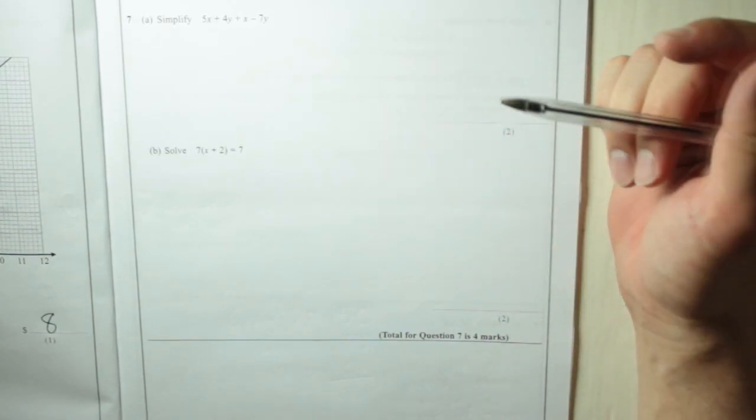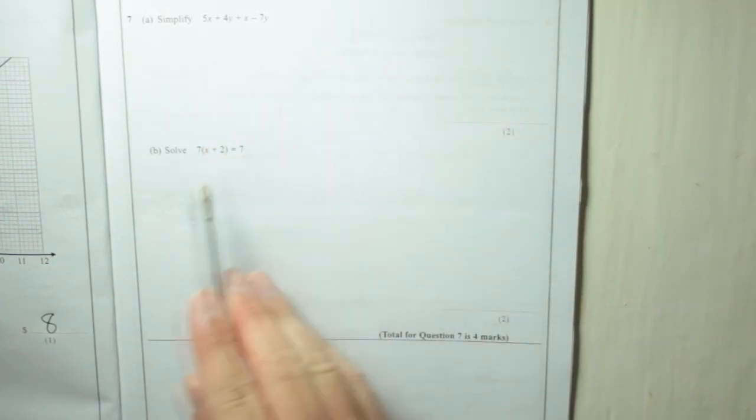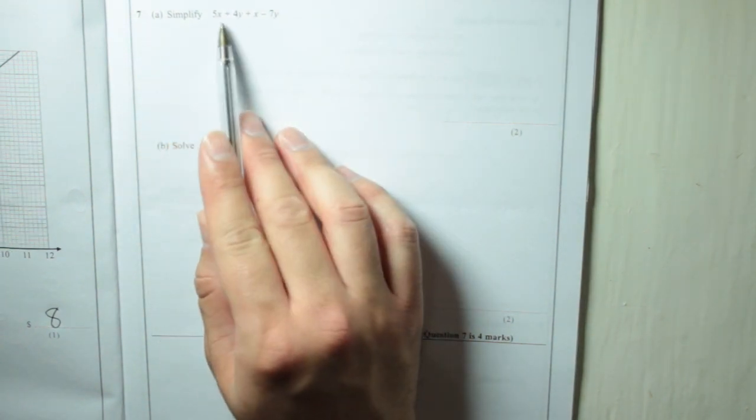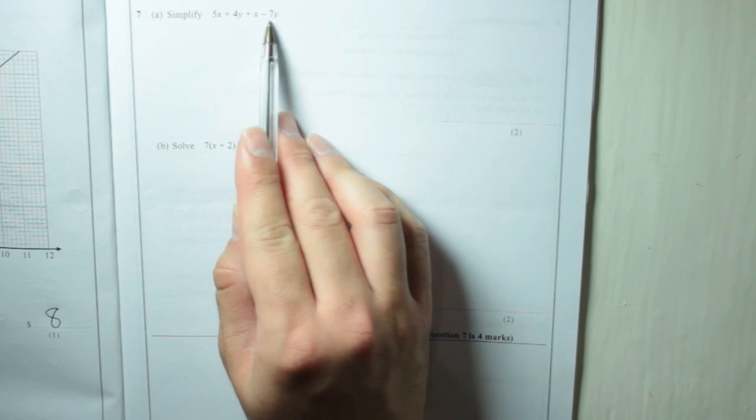Now we've got a couple of algebra questions, simplification and solving an equation. So to set up an array, simplify 5x plus 4y plus x minus 7y.